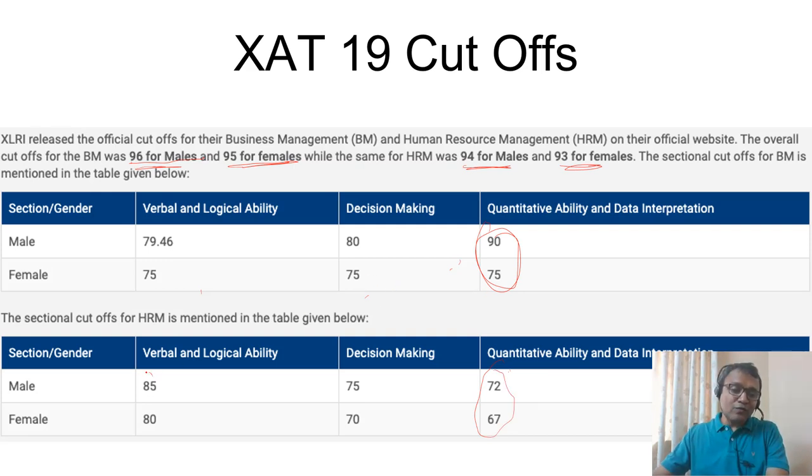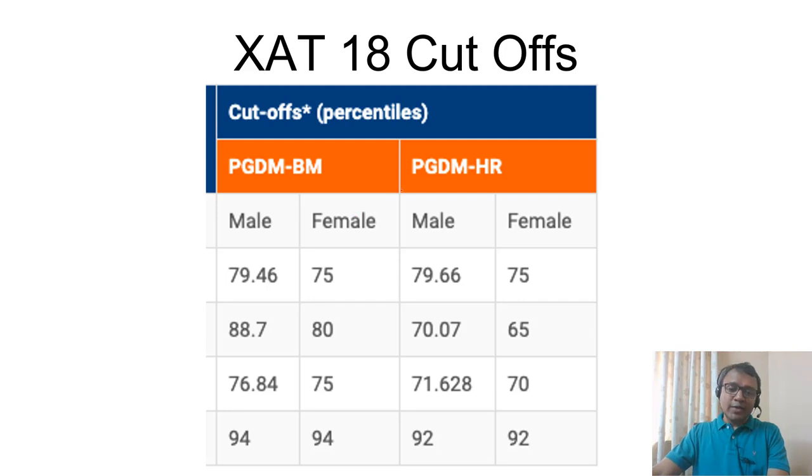In HRM, the verbal cutoff will be slightly higher. This was the 2018 cutoff. Verbal, quant, and decision making - the quant cutoff is higher for BM. That's how it works.